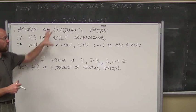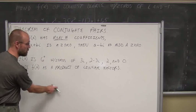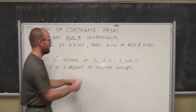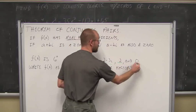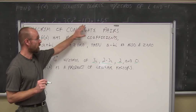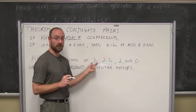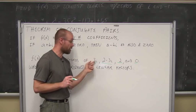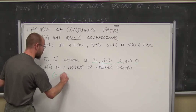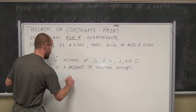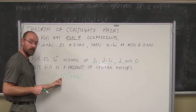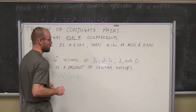Let's look at an example applying this concept. If f of x is a 6th degree polynomial with zeros of 3i, 2 minus 3i, 2, and 0 — write the polynomial f of x as a product of linear factors. Well, since 3i is a solution in the complex number system, its conjugate, negative 3i, must also be a solution. So x minus 3i is one factor, and x plus 3i must also be a factor — that's the theorem of conjugate pairs. If we have an imaginary solution, we also have its conjugate.